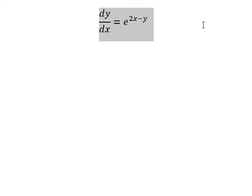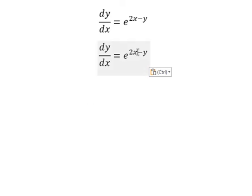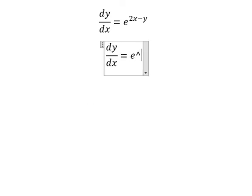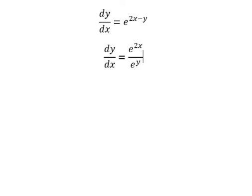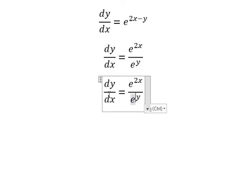We have the equation dy/dx equals e to the power of 2x minus y. I can rewrite this as e to the power of 2x over e to the power of y. Next, we put e to the power of y on the left and dx on the right.